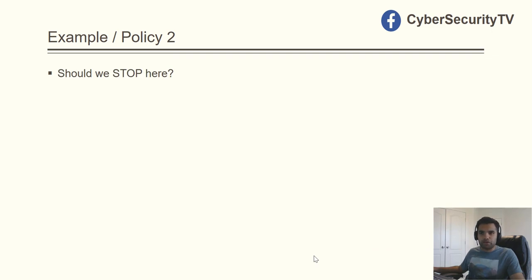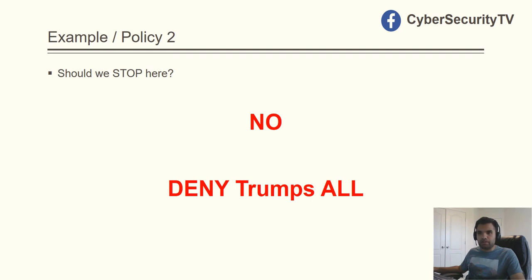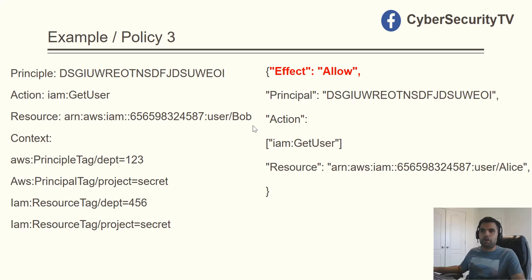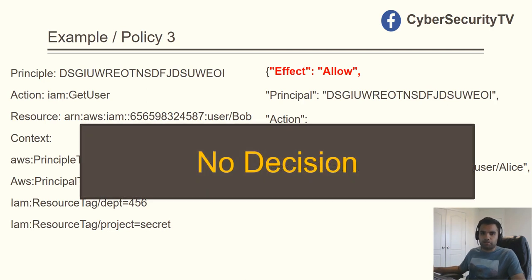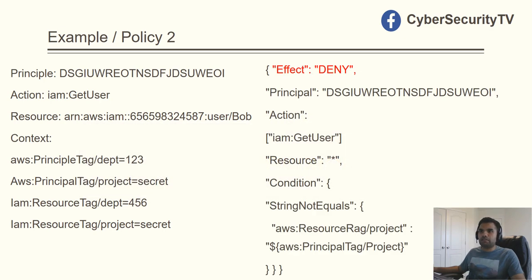At this point you might think we can stop, but the answer is no. Because if even one policy says deny, it trumps everything. So we still need to evaluate all remaining policies to check for any explicit deny. Policy three has effect Allow — since we've already found an allow and this won't change our decision (it's not a deny), we skip processing it.